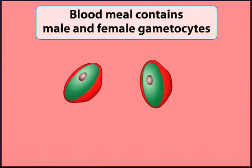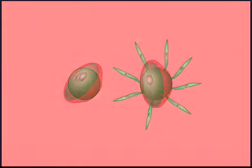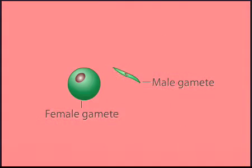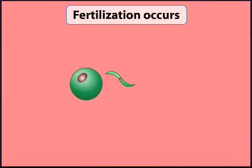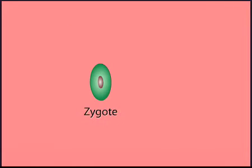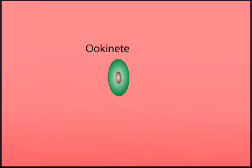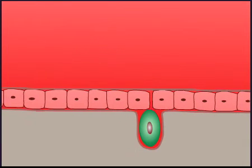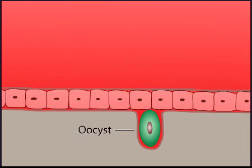In the mosquito's gut, the gametocytes escape from the red blood cells and develop into male and female sex cells called gametes. A male and a female gamete fuse to produce the first cell of the next generation, the zygote. The zygote matures into a motile cell called an ookinete and migrates to the wall of the mosquito's gut, where it develops into an oocyst.